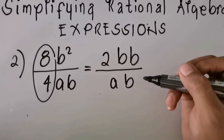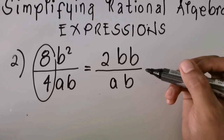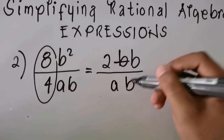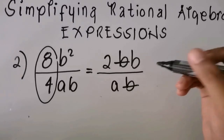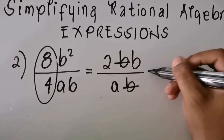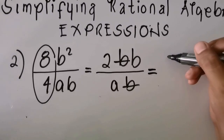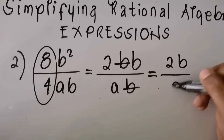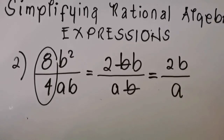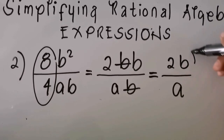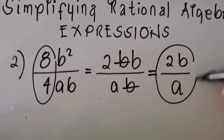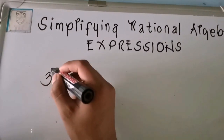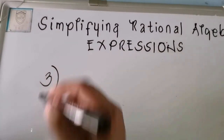We simply cancel one b from the numerator with the b in the denominator. What remains is 2b over a. So this is the answer for example number two.